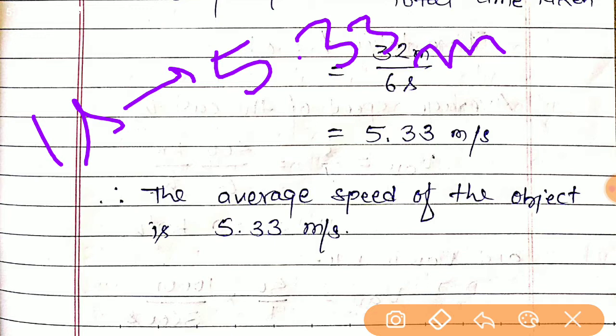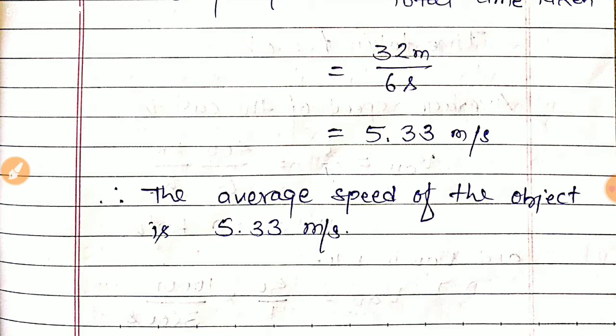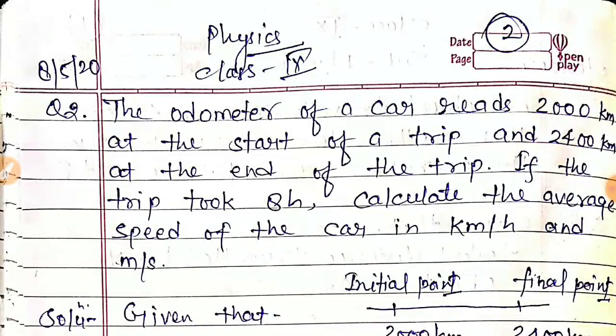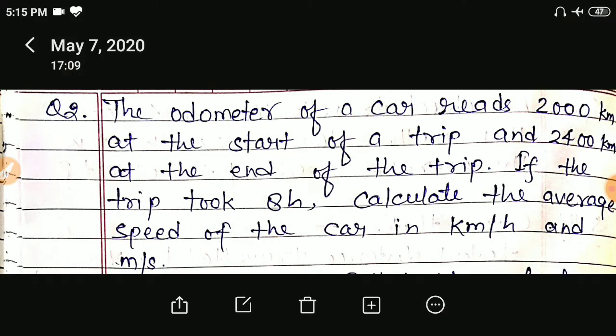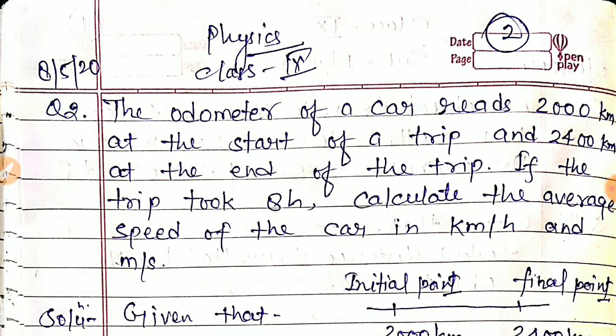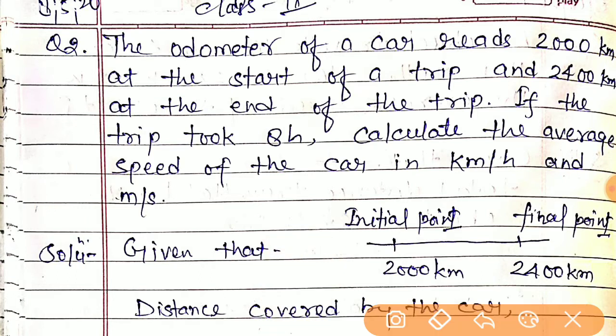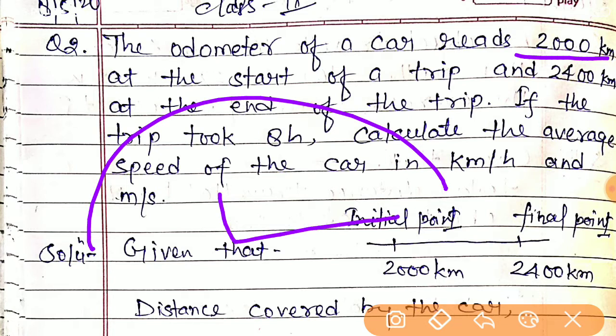Now look at question number two. Given that the odometer of a car reads 2000 kilometers at the start of a trip and 2400 kilometers at the end of the trip, if the trip took 8 hours, calculate the average speed of the car in kilometers per hour and meters per second.